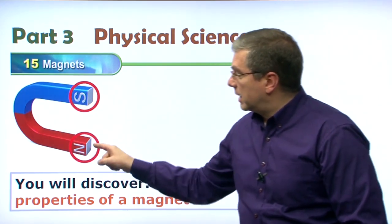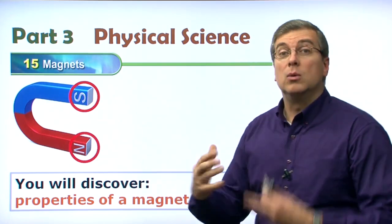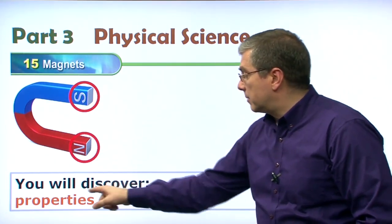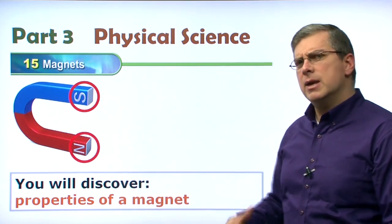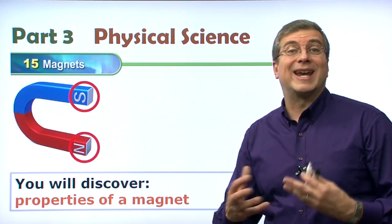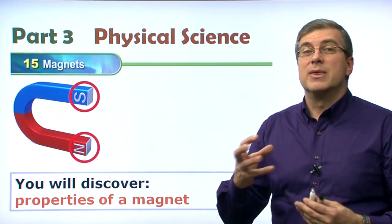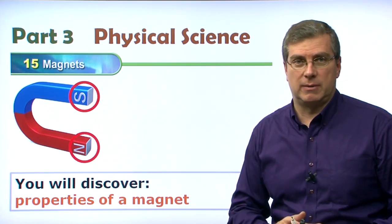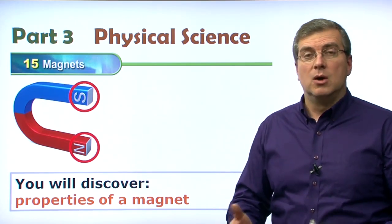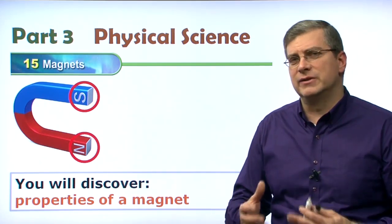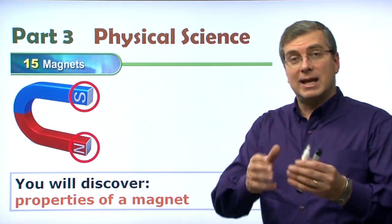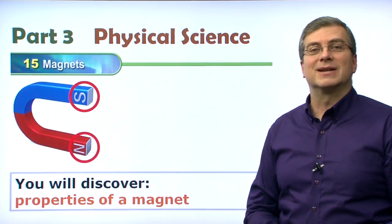This is a magnet. It has a North Pole and a South Pole. In this unit, we will discover the properties of a magnet. Properties are the characteristics — the things we can say about something. What can we say about magnets? How do they work? What sorts of forces do they use? These are the properties of a magnet, and that's what we're going to talk about in this lesson today.